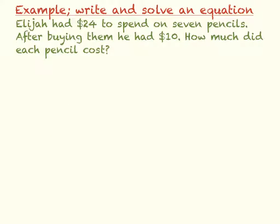In this next example, Elijah had twenty-four dollars to spend on seven pencils. After buying them, he still had ten dollars. How much did each pencil cost? So the total amount of money that he has is twenty-four dollars.